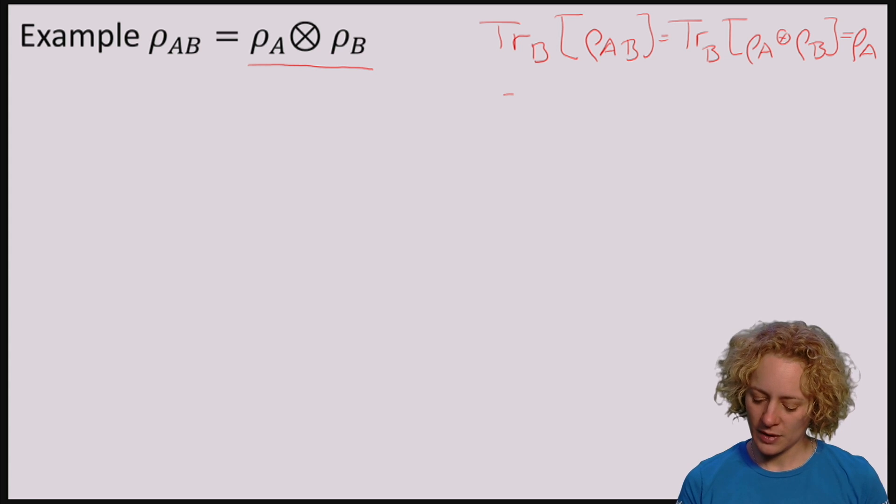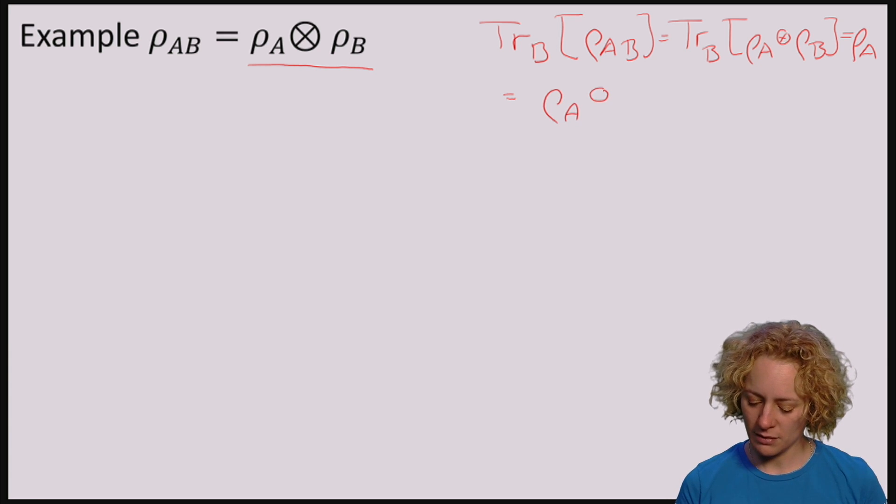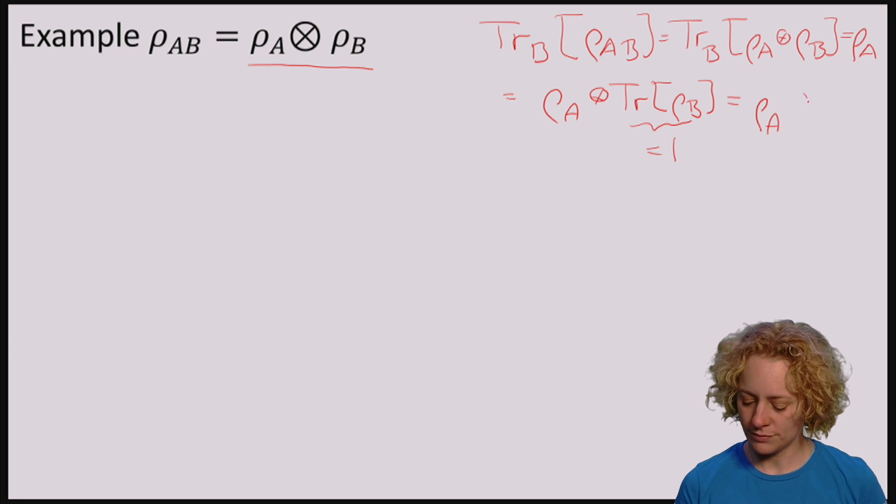And we do this by applying the trace not to the A part but to the B part. So in this case we would be computing ρ_A tensor the trace of ρ_B, but because the trace of all quantum states is one, this is just ρ_A as promised.